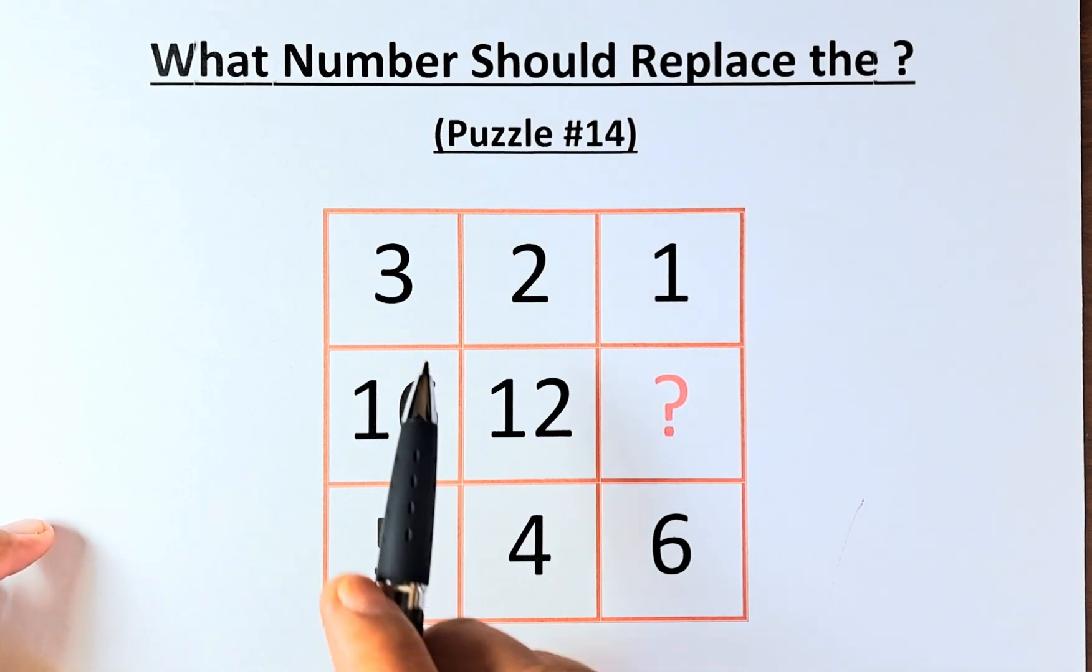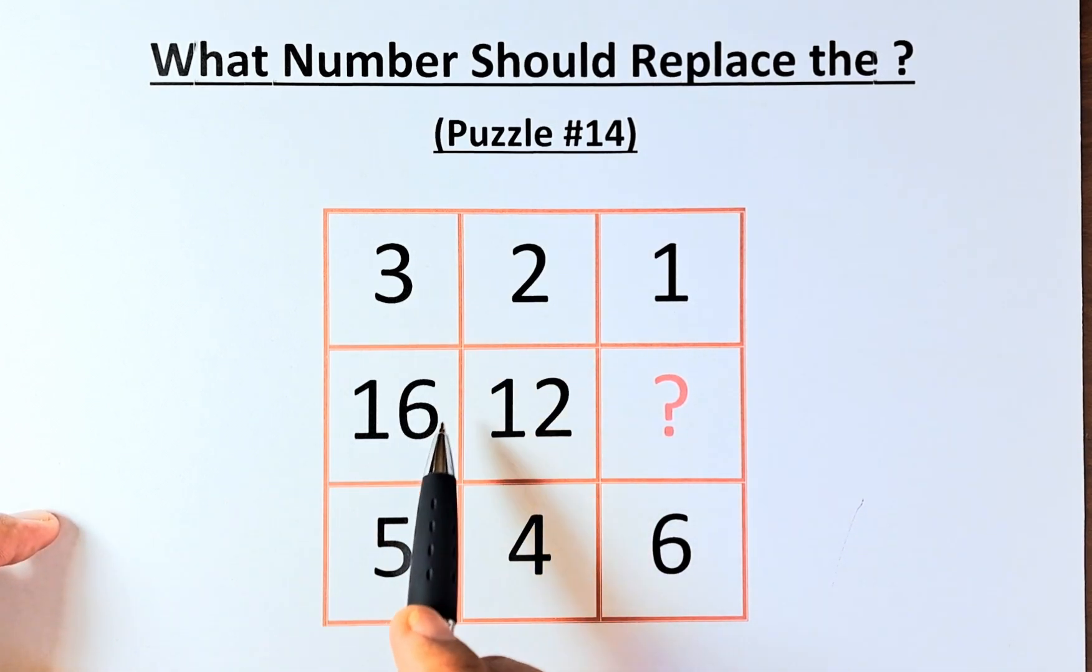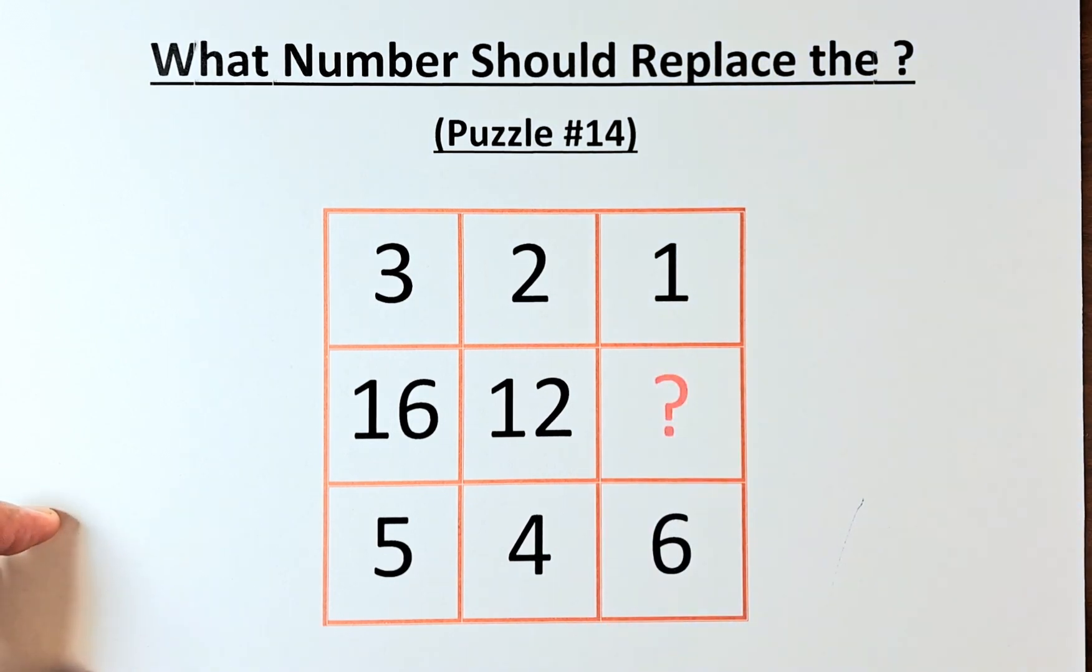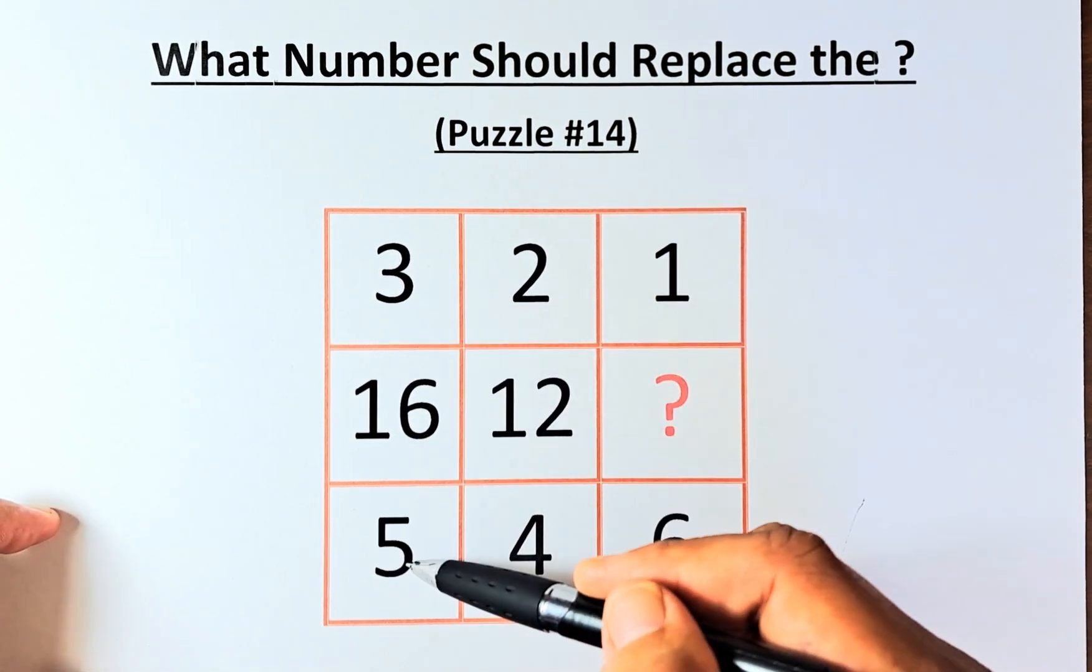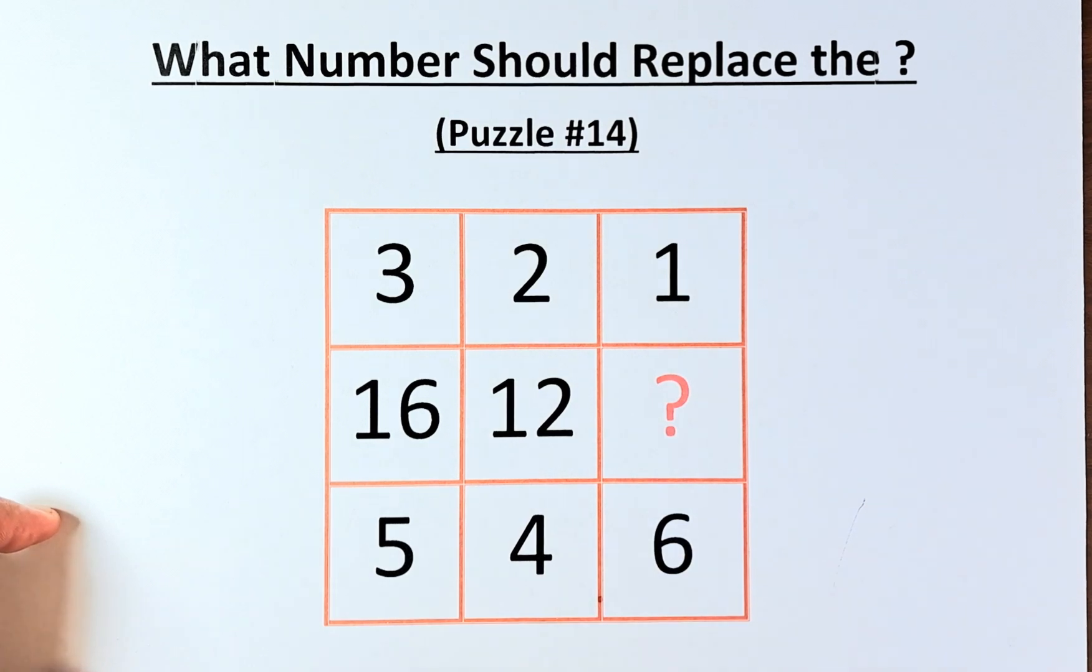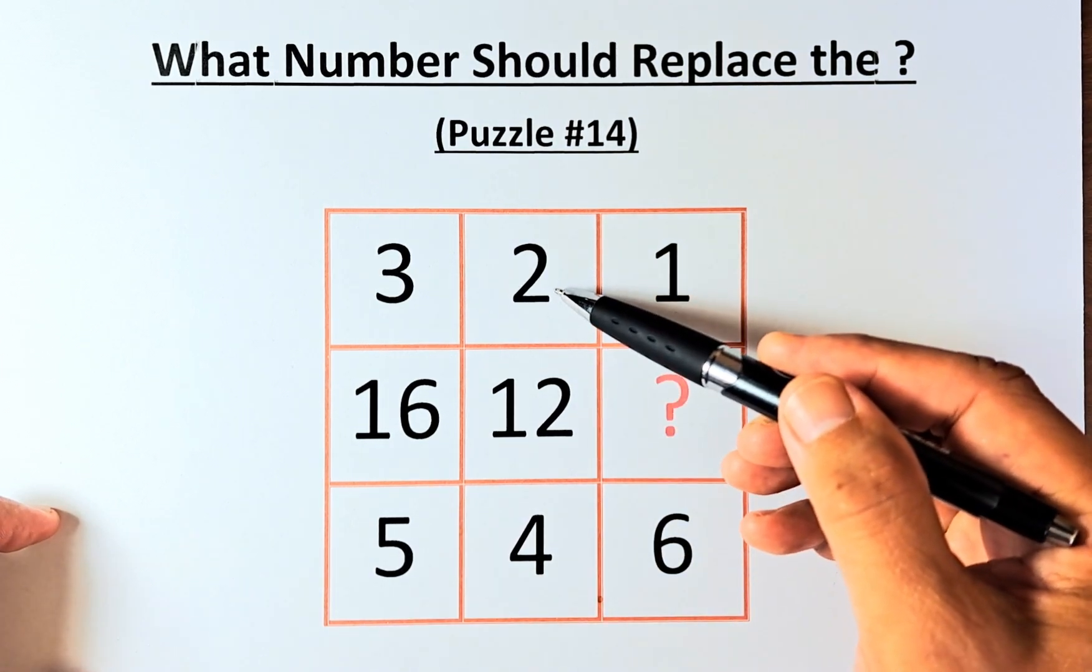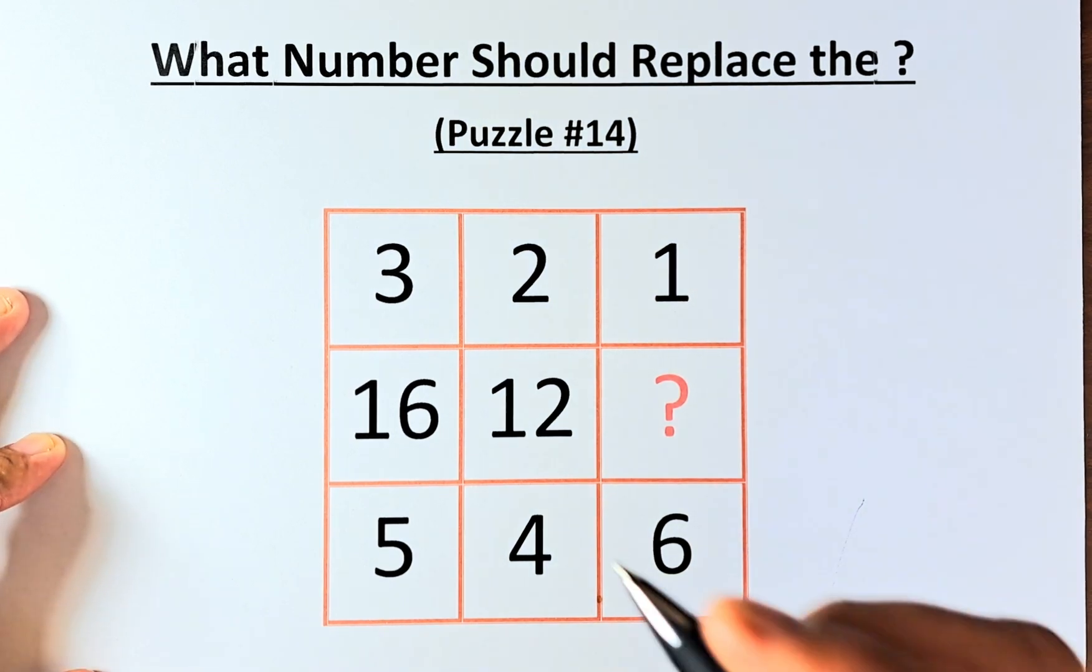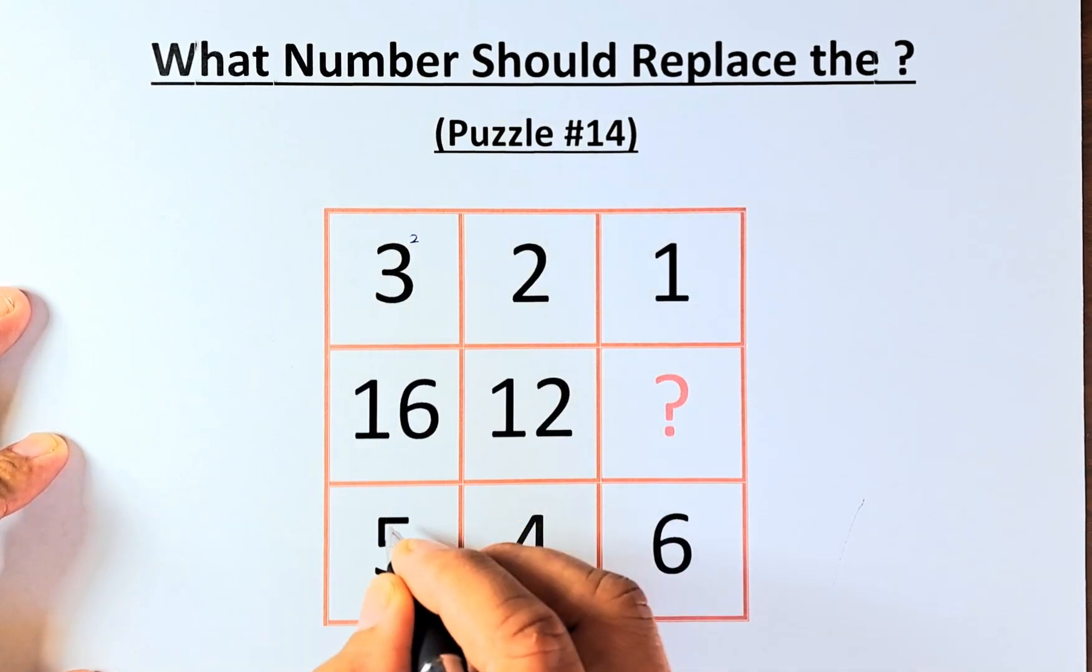So look at the numbers: 3, 16, 5, then 2, 12, 4, then 1, question mark, 6. We need to manipulate the two smaller numbers to get the middle number, which is 16. Similarly, we need to manipulate 2 and 4 to get 12. So to do that, it's very simple. What we're going to do, we're going to square both numbers at the top and bottom.